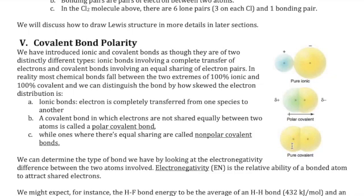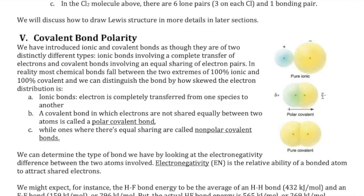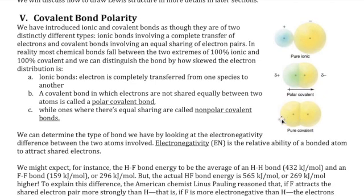Sometimes electrons are shared equally by both species; other times one species gets more of the shared electrons than the other. When that happens, one species becomes more negative (δ⁻) and the other less negative (δ⁺). These are called delta minus and delta positive — partially positive and partially negative, unlike a full ion. Because you have these two poles, we call this a dipole, which is an example of a polar covalent bond. When sharing is equal, it is called a non-polar covalent bond, or pure covalent bond.